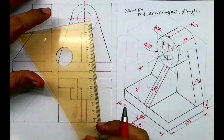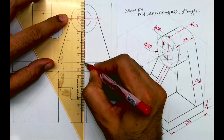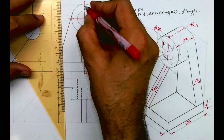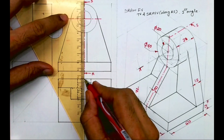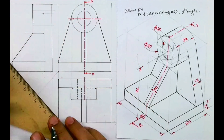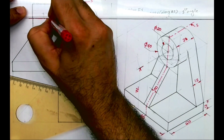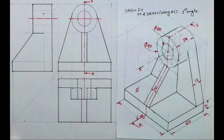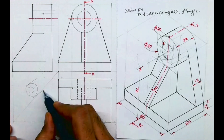Now when we cut along RS, we need to draw the cutting plane line. Along RS — this is S and R. In the top view also you can show the axis line, and inside wherever you draw a circle you can draw the axis line.